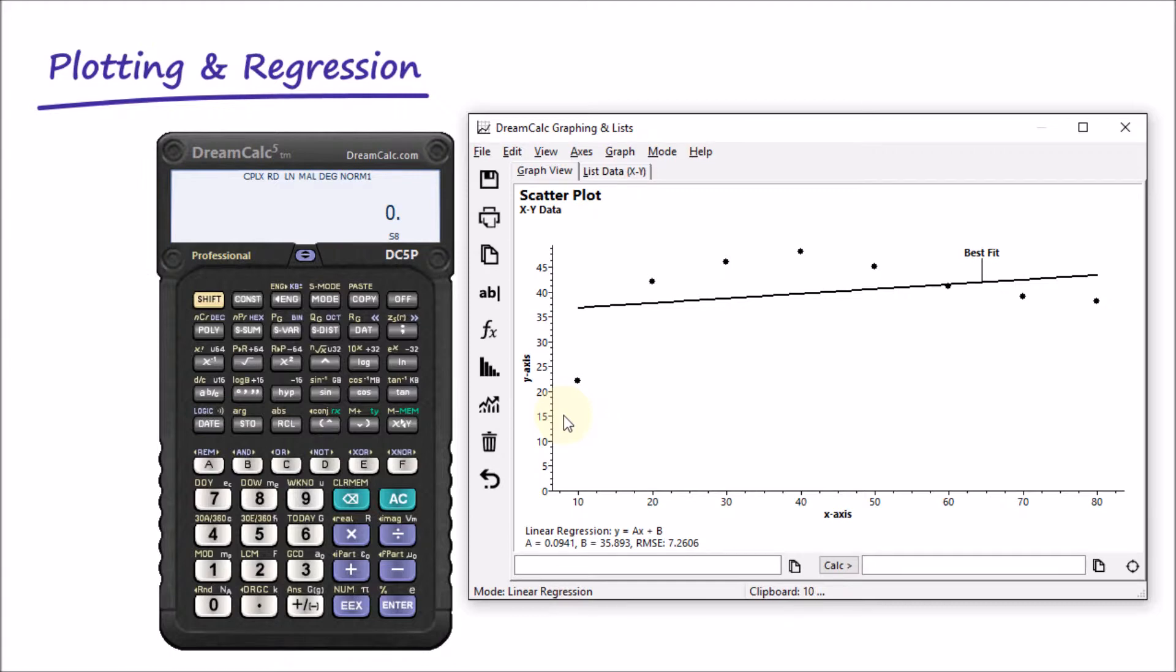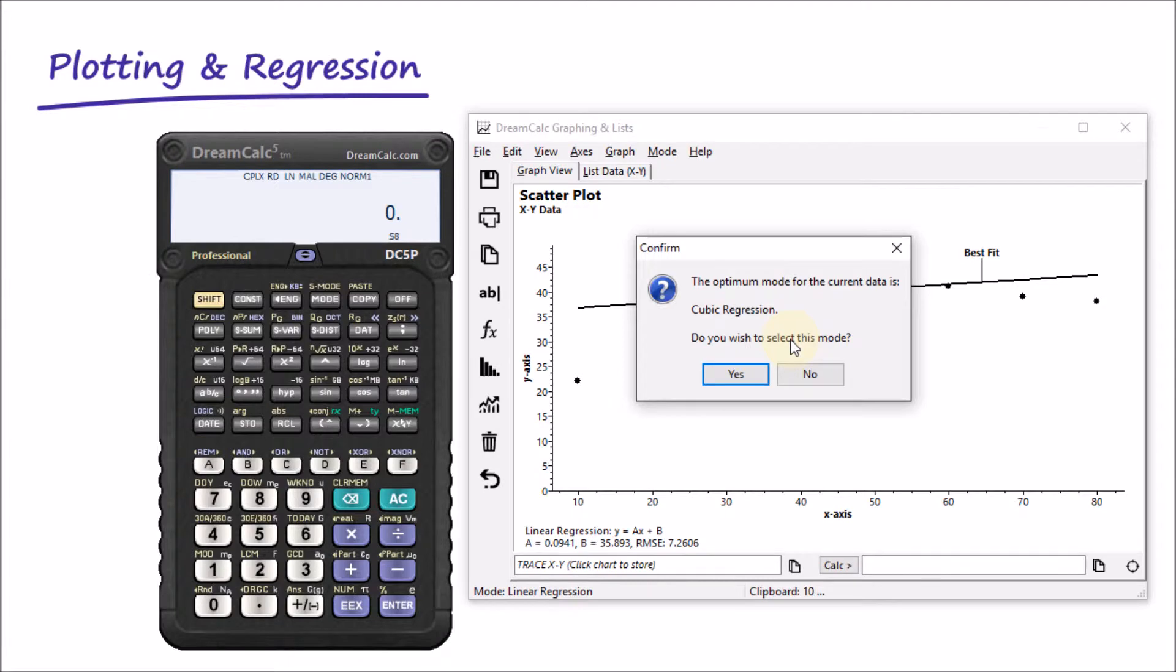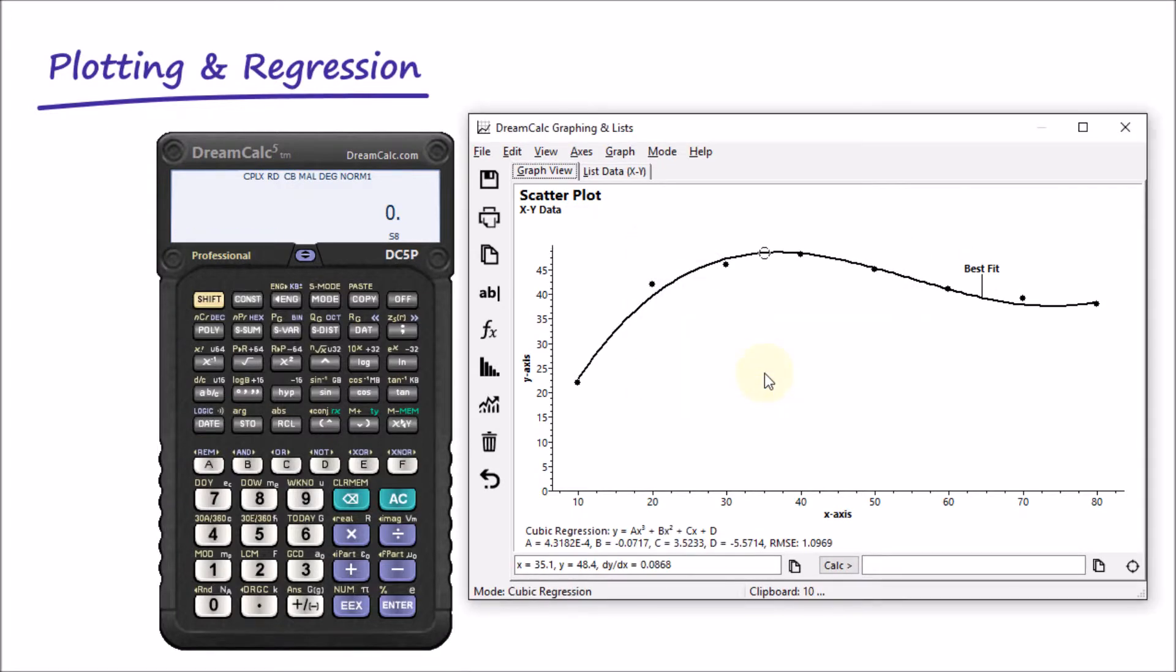In fact, we can have DreamCalc find the best regression mode for us. It turns out that cubic regression is a good fit for this data, and in the footer of the plot we see the regression formula along with the coefficients calculated.